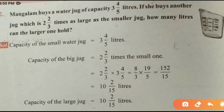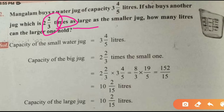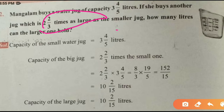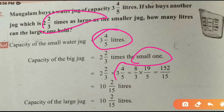Second question: Mangalam buys a water jug of capacity 3 and 4 by 5 liters. If she buys another jug that is 2 and 2 by 3 times as large as the smaller jug, how many liters can the larger jug hold? So Mangalam buys 2 jugs. The first jug capacity is 3 and 4 by 5 liters. The second jug is 2 and 2 by 3 times larger than the previous jug.